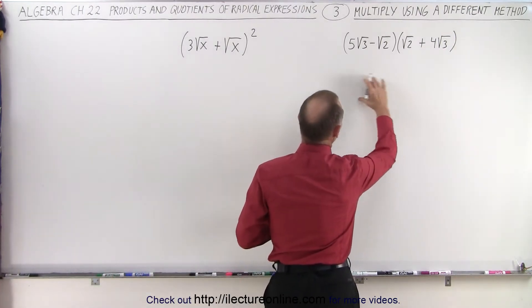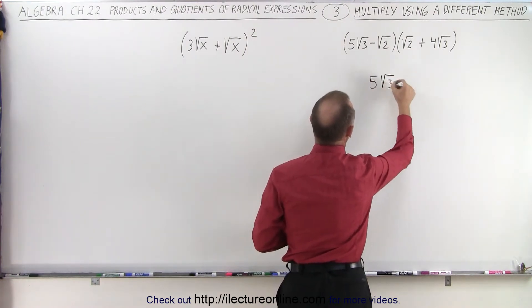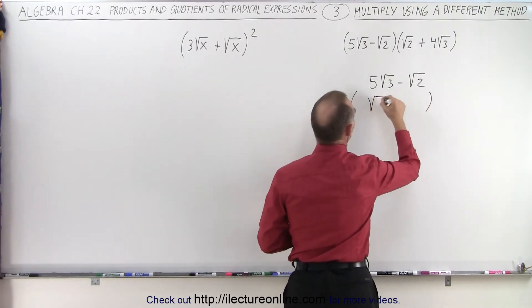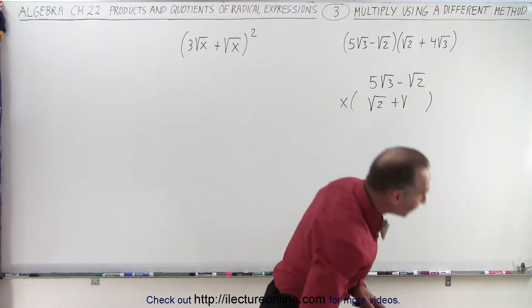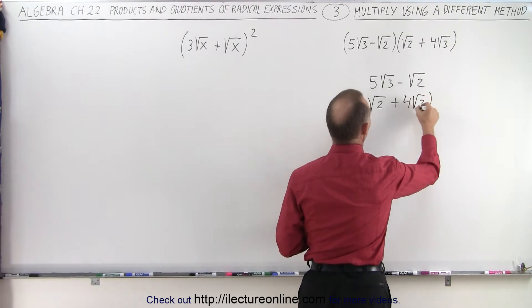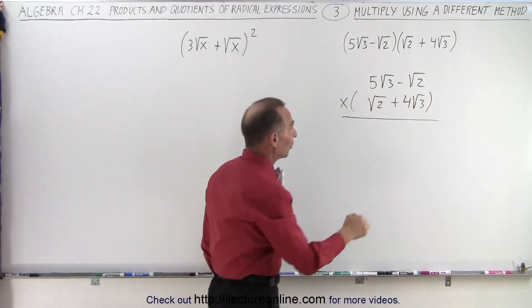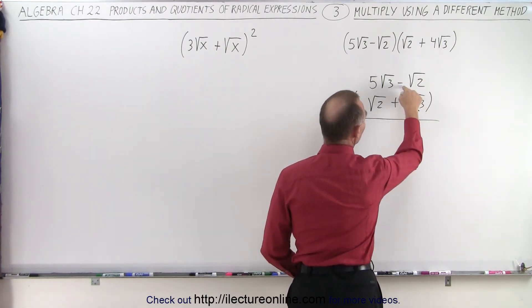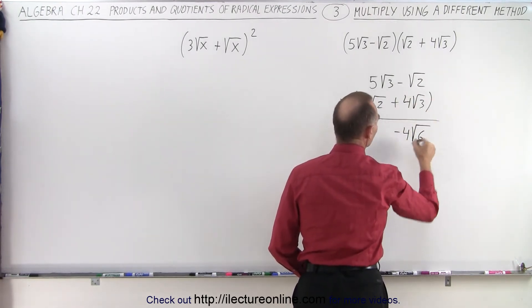What we're going to do is write them on top of one another: 5 times the square root of 3 minus the square root of 2, multiply times the square root of 2 plus 4 times the square root of 3. Now let's multiply them together. We take this term and multiply times this one, so 4 times the negative gives minus 4 times the square root of 3 times 2, which gives me the square root of 6.